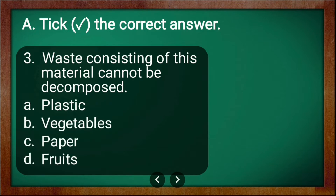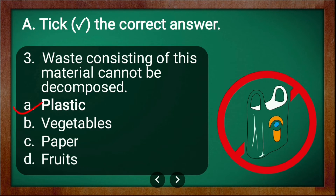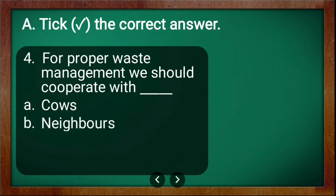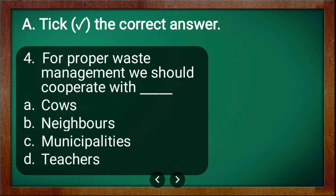Third question: waste consisting of this material cannot be decomposed. The options are plastic, vegetables, paper, fruits. The answer is plastic. Plastic doesn't get decomposed, whereas vegetables, paper, and fruits can get easily decomposed.